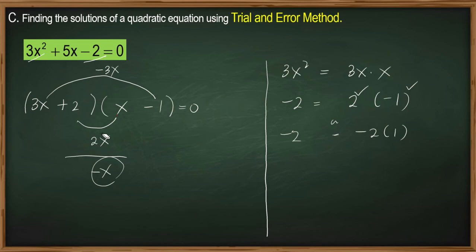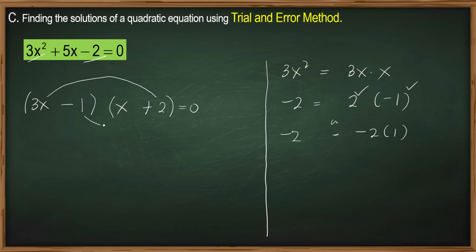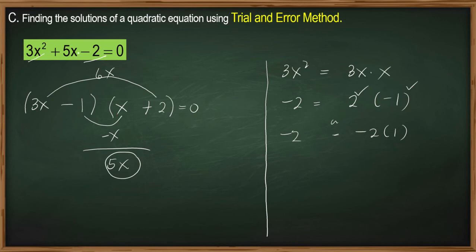That's why it's called trial and error — when you make a mistake or your initial factors are wrong, you try again. What if we switch positive 2 to the other side and negative 1 here? So positive 2 is placed here, and then we have negative 1 here. We get the product of the outer terms and inner terms. 3x times 2 equals 6x, and negative 1 times x is negative x. Adding the resulting products: 6x plus negative x is equal to 5x. It is now equal to our linear term. So 3x minus 1 and x plus 2 are the correct factors.